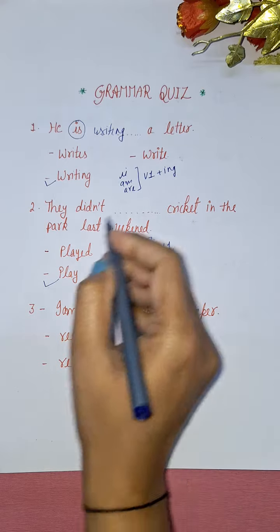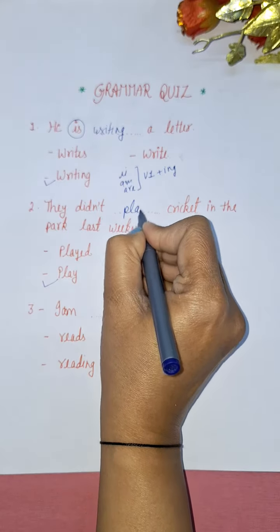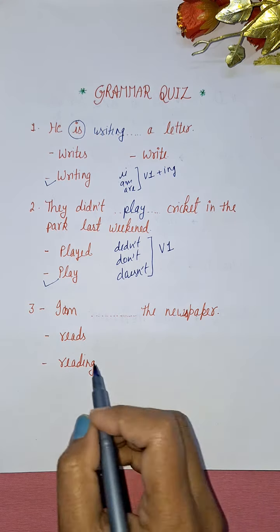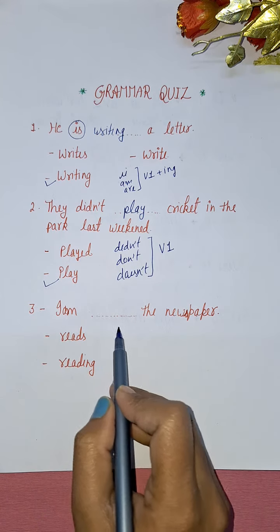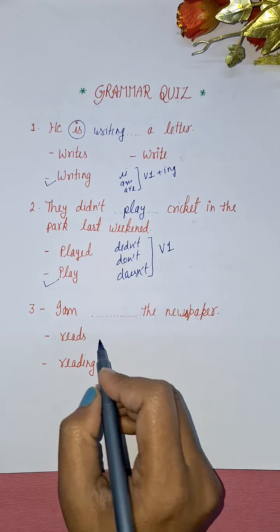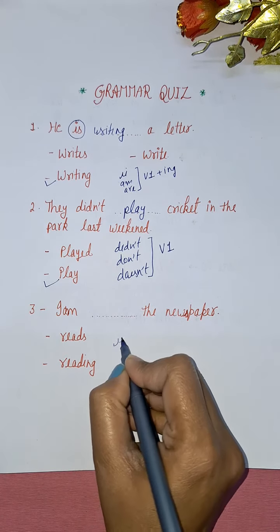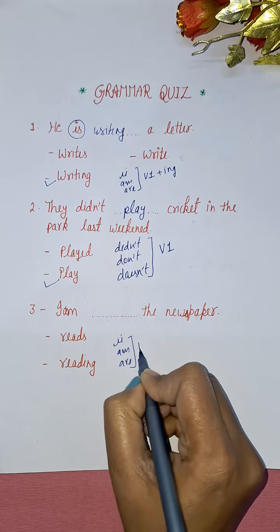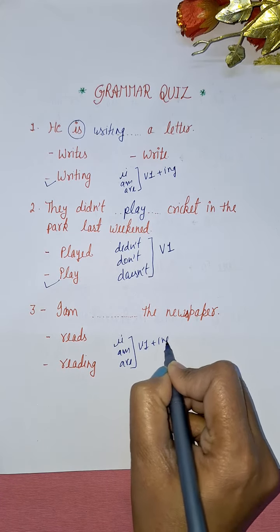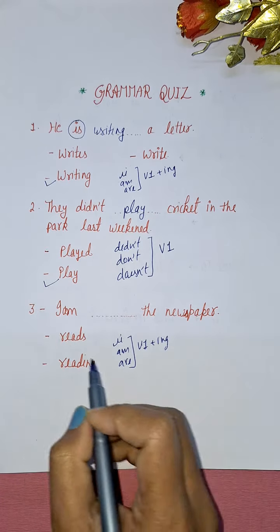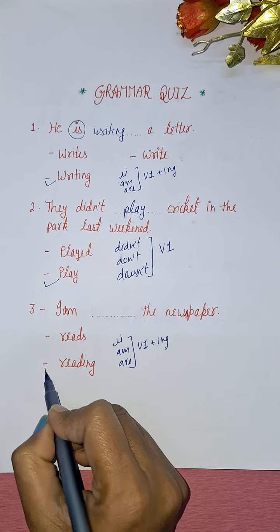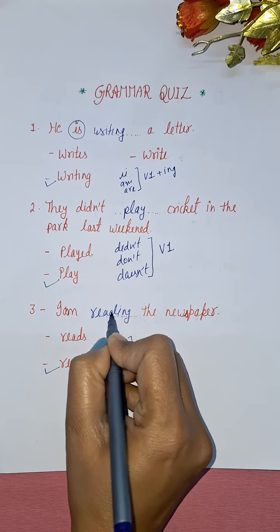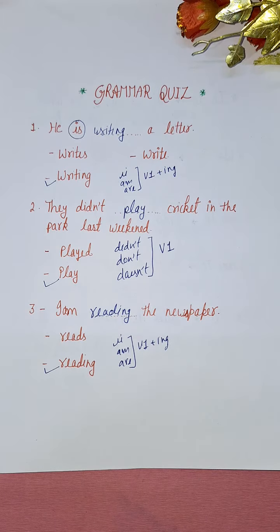Now last one is: I am ___ the newspaper. Listen guys, with is, am, are - all three - we always use verbs first form plus ing. So here the right option will be reading. I am reading. I am reading the newspaper.